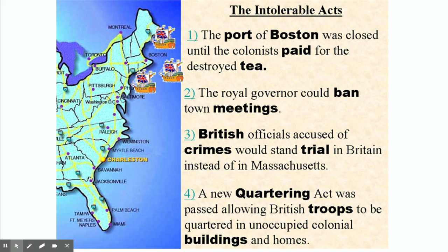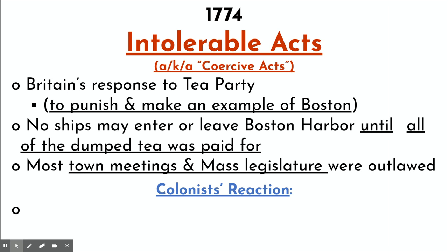They sent over more soldiers. The Quartering Act was revived, allowing troops to be quartered in unoccupied homes and buildings — they usually preferred warehouses so as not to upset too many colonists. Britain's goal was to punish Boston and scare other colonies like Pennsylvania, New York, and Virginia into not behaving the way those in Boston did.